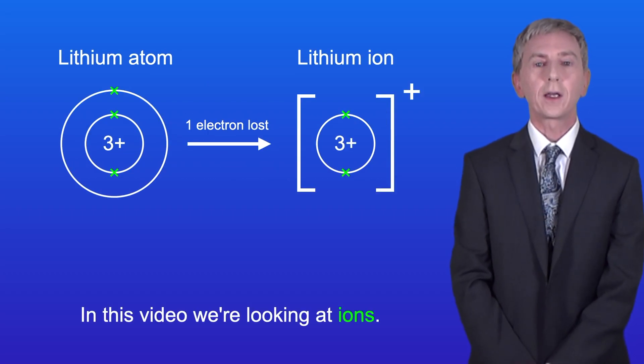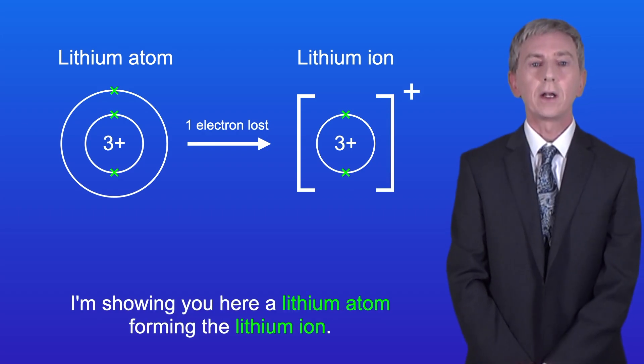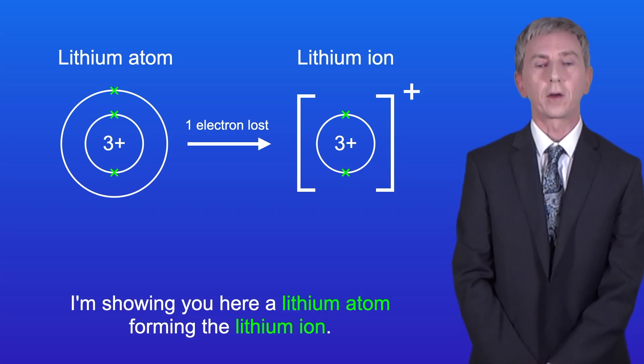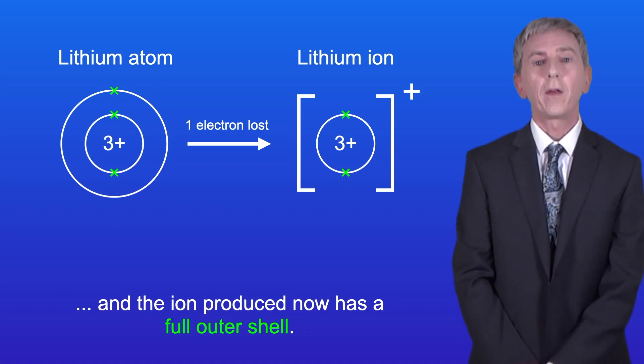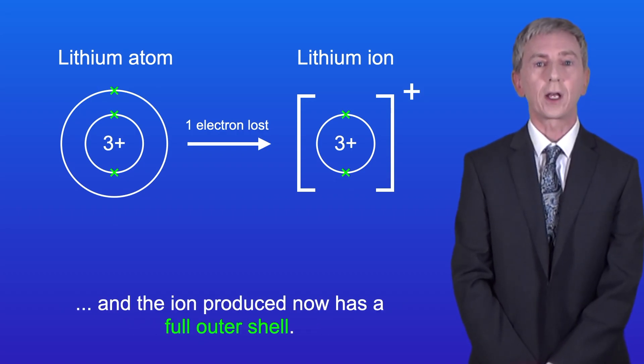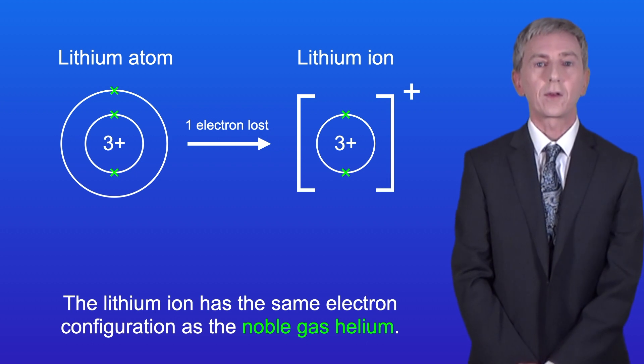Okay, so in this video we're looking at ions. I'm showing you here a lithium atom forming the lithium ion. As you can see, the lithium atom loses its one outer electron and the ion produced now has a full outer shell. The lithium ion has the same electron configuration as the noble gas helium.